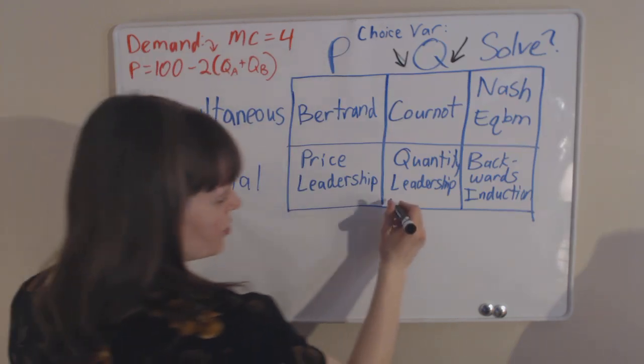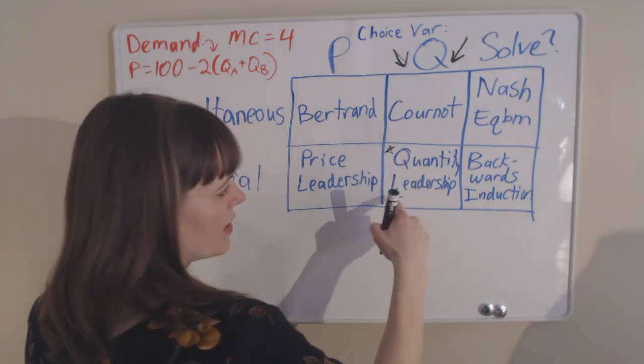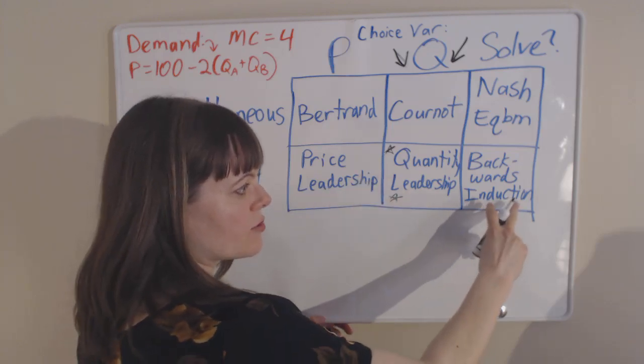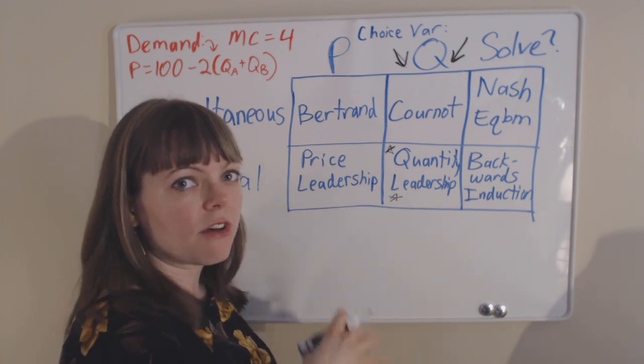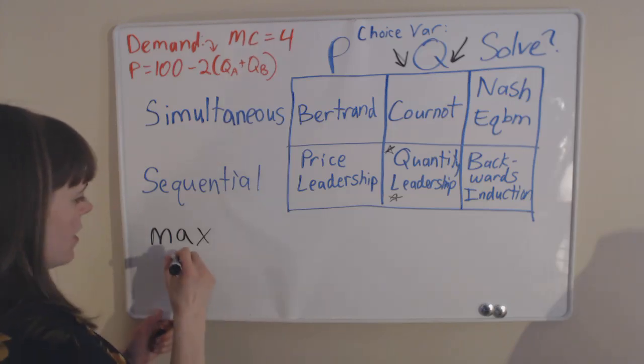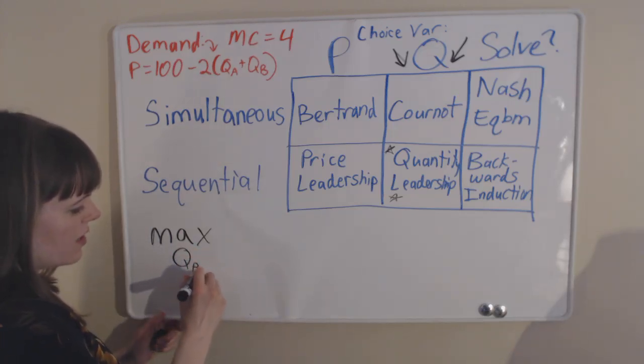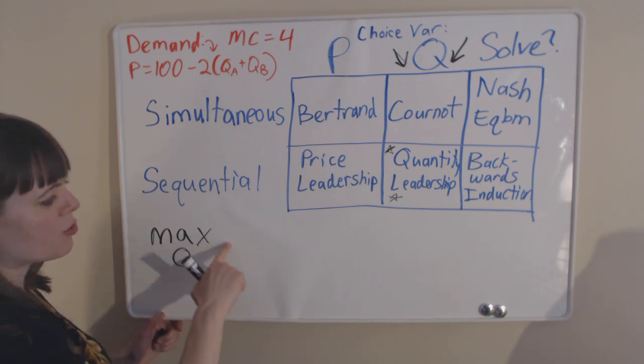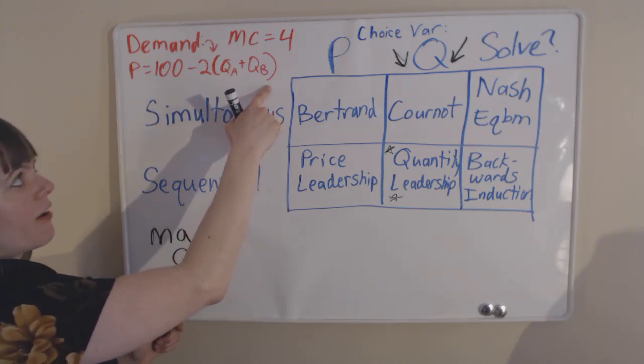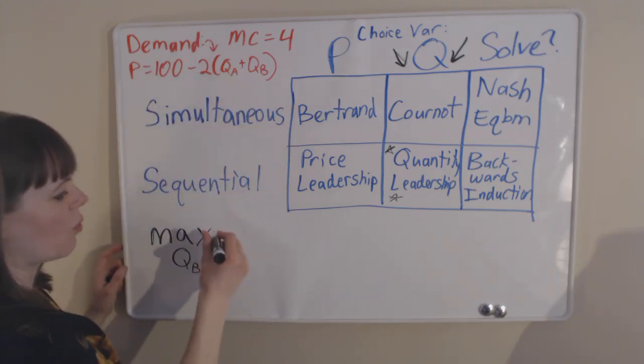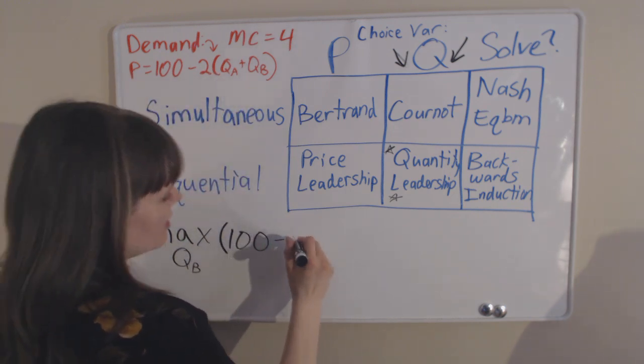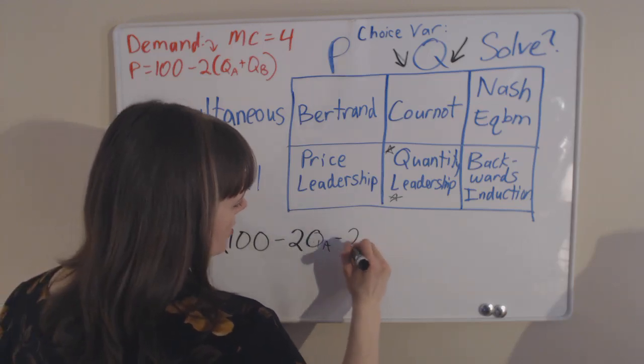With quantity leadership, there's a player A and player B, first mover and second mover. We're going to use backwards induction to solve this, meaning we need to solve the second mover's problem first. So let's start with firm B. We're going to maximize by choosing the quantity of firm B. We're going to maximize price times quantity, but the demand function defines that relationship. Let's plug in our price: 100 minus 2QA minus 2QB.